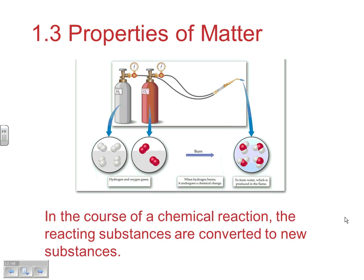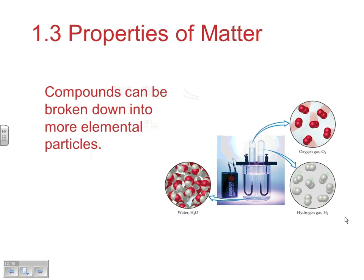In a chemical reaction, the reacting substances are converted into new substances — you're breaking apart the old arrangement and reforming into something new. Compounds can be broken down into more elemental particles, while elemental substances cannot be broken apart chemically.